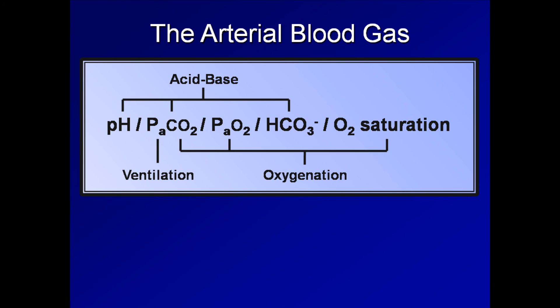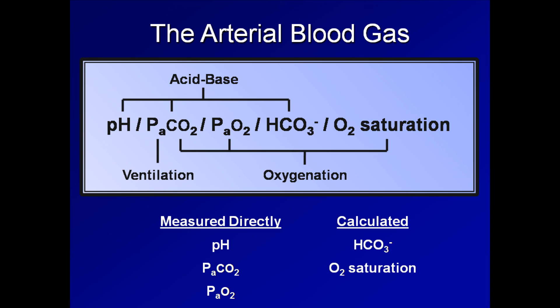One last point about these values from the ABG concerns how they are determined by the machine. The big three — that is, the pH, the PaCO2, and the PaO2 — are all measured directly. The bicarb is calculated using the Henderson-Hasselbalch equation, and the O2 sat is calculated using a complicated nomogram relating PaO2 and temperature. So overall, while the ABG basically contains just five values, it provides critical information about a patient's gas exchange and systemic metabolic pathways. It is an essential tool for diagnosing and prognosticating an extremely wide variety of pathologic conditions.